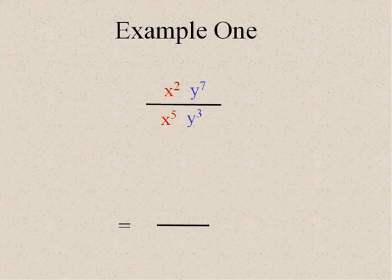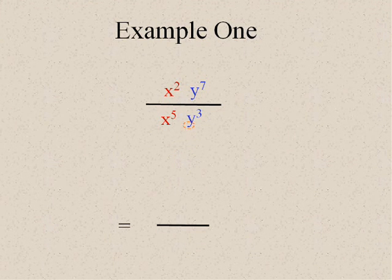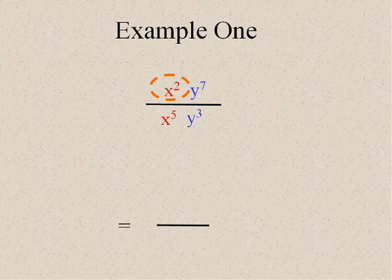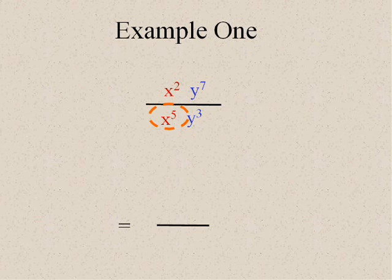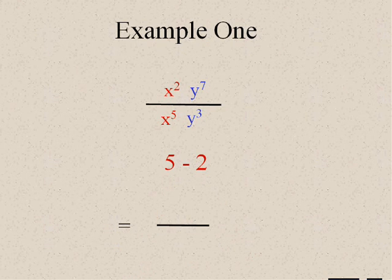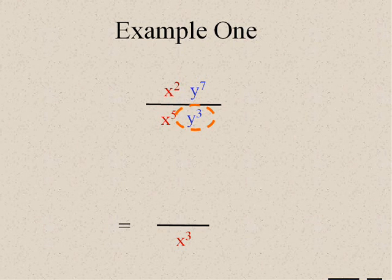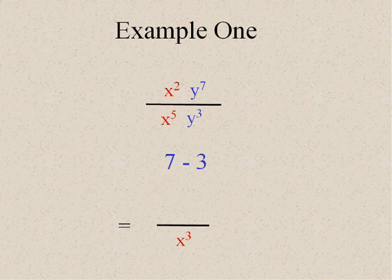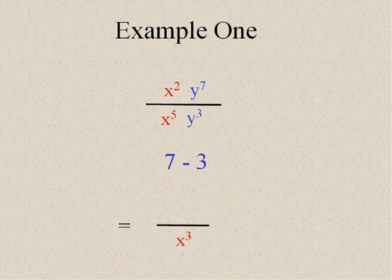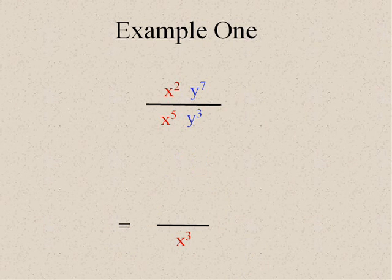Well, I'm going to give you a shortcut in this case so that you don't have to write all those out. Now, couldn't you say that we took x to the second, x to the fifth, subtracted, and put the answer where the largest one was? Always works. Y to the seventh and y to the third we subtracted and put the answer where the largest one was. It's a lot easier that way, isn't it?